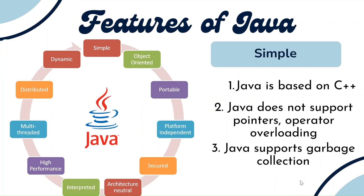Now we will see them one by one. Why is Java simple? Java is based on C++ — it has derived its syntax and object oriented concepts from C++. So if we have some prior knowledge in C++, then Java will be simple.